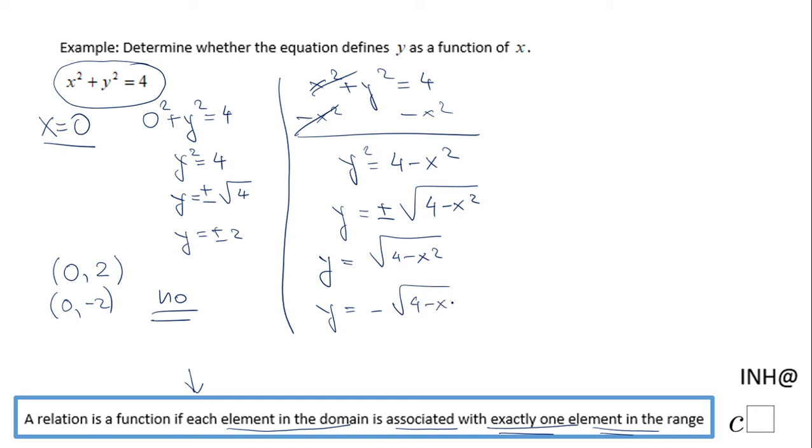So you have two situations here for the same value of x, like in that case was 0. So that's the reason, another way to see why we have two y's for one x.